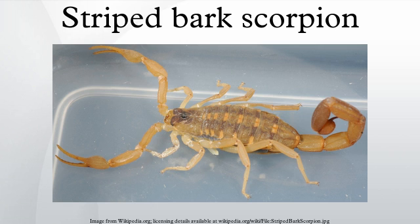The striped bark scorpion is an extremely common scorpion found throughout the midsection of the United States and northern Mexico. It is perhaps the most frequently encountered scorpion in the U.S.